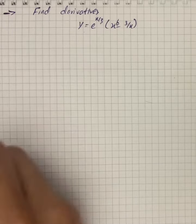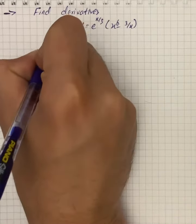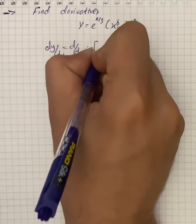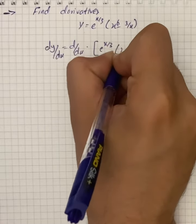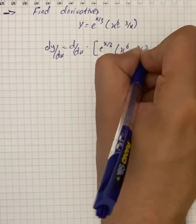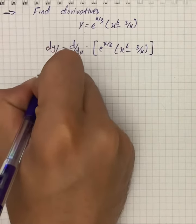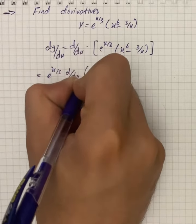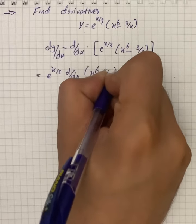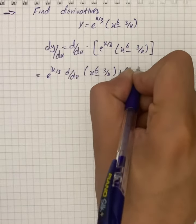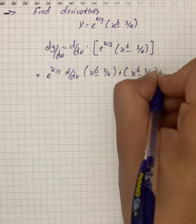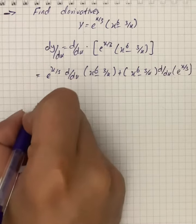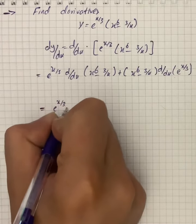Here we have to find the derivative, so we can write that dy over dx is equal to d over dx of e raised to x by 3 into x raised to 6 minus 3 by x. Applying the product rule, we can write e raised to x by 3 into d over dx of x raised to 6 minus 3 over x, plus x raised to 6 minus 3 over x into d over dx of e raised to x by 3.